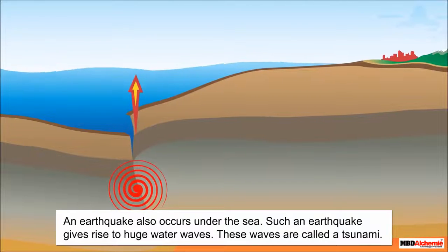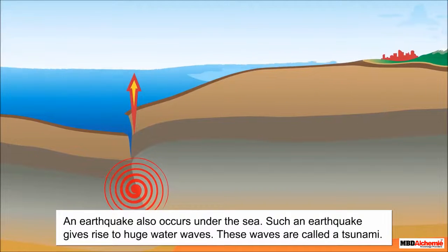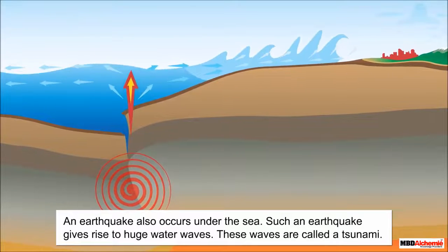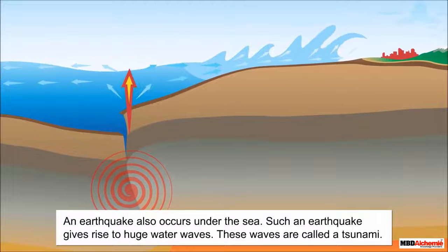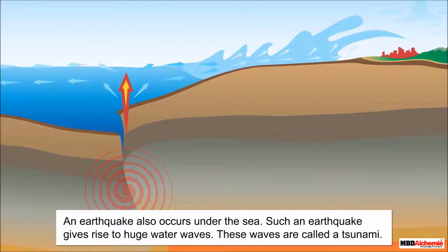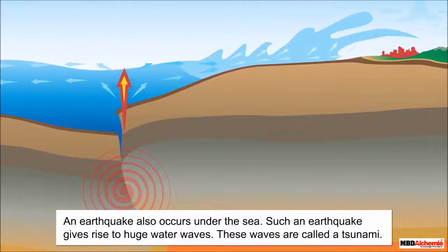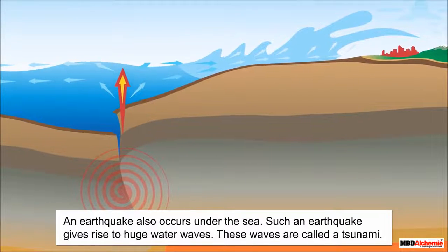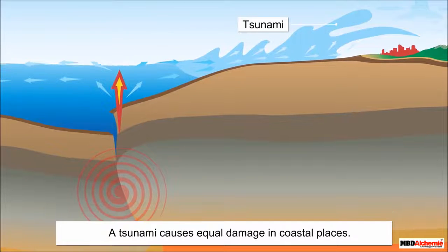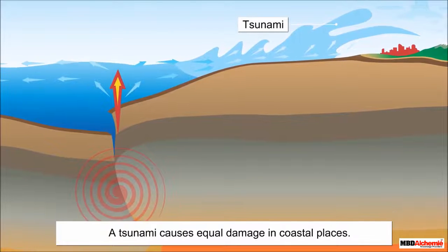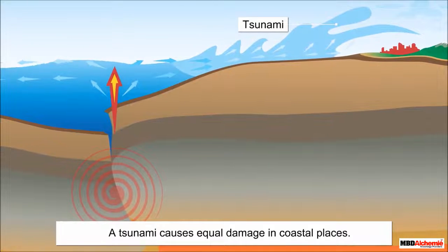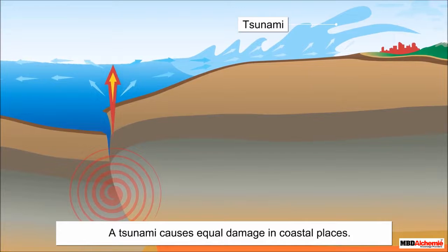An earthquake also occurs under the sea. Such an earthquake gives rise to huge water waves. These waves are called a tsunami. A tsunami causes equal damage in coastal places.